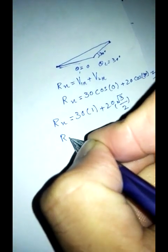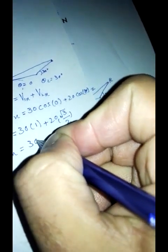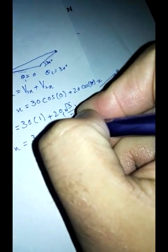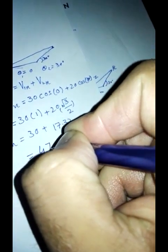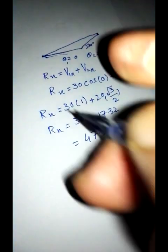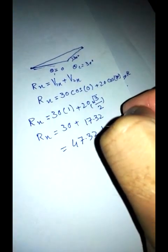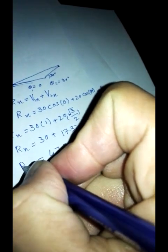So Rx will be equal to 30 plus 17.32, that will be equal to 47.32 kilometers. So this is the resultant in the x direction.